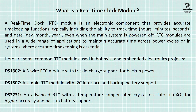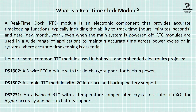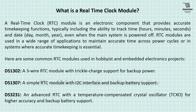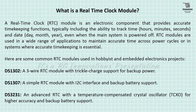DS1302 is a 3-wire RTC module with trickle charge support for backup power, which we will discuss in detail later. DS1307 is a simple RTC module with I2C interface and backup battery support, which we will discuss in our next video. DS3231 is an advanced RTC with a temperature compensated crystal oscillator for higher accuracy and backup battery support, also to be covered in our next video.